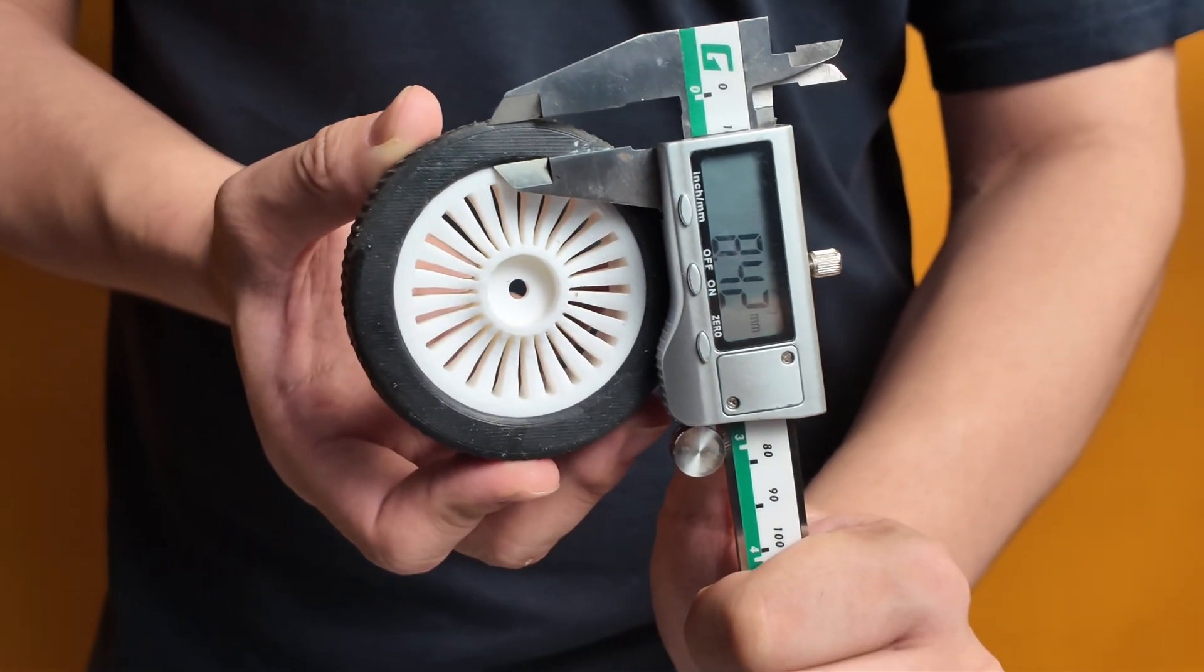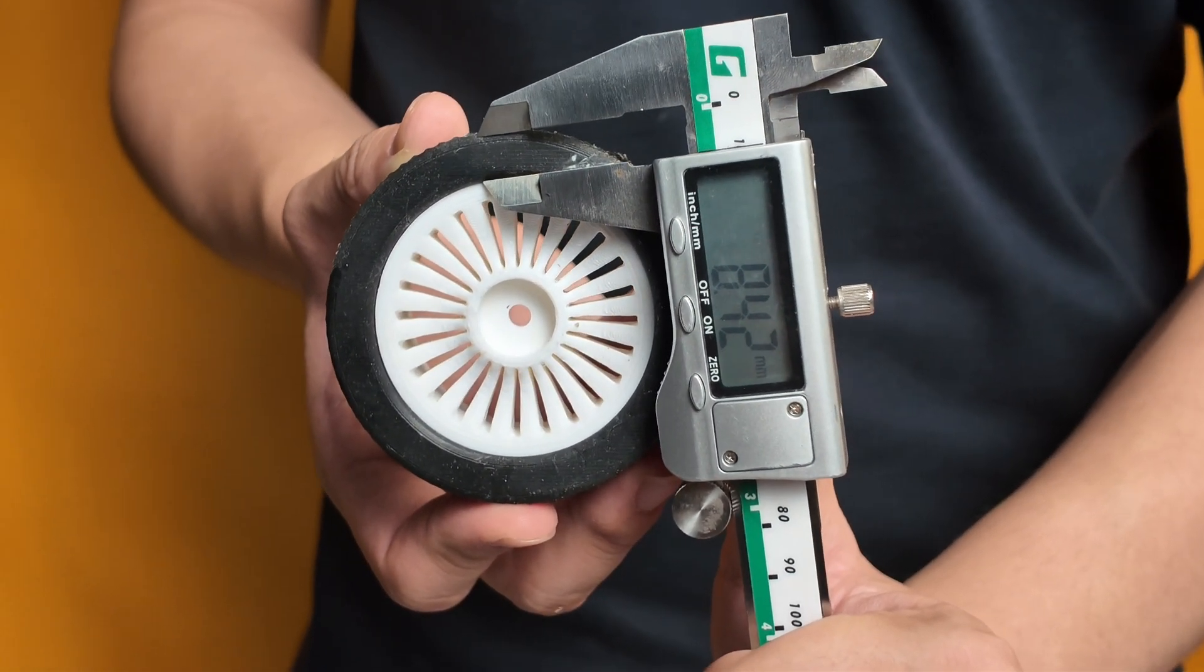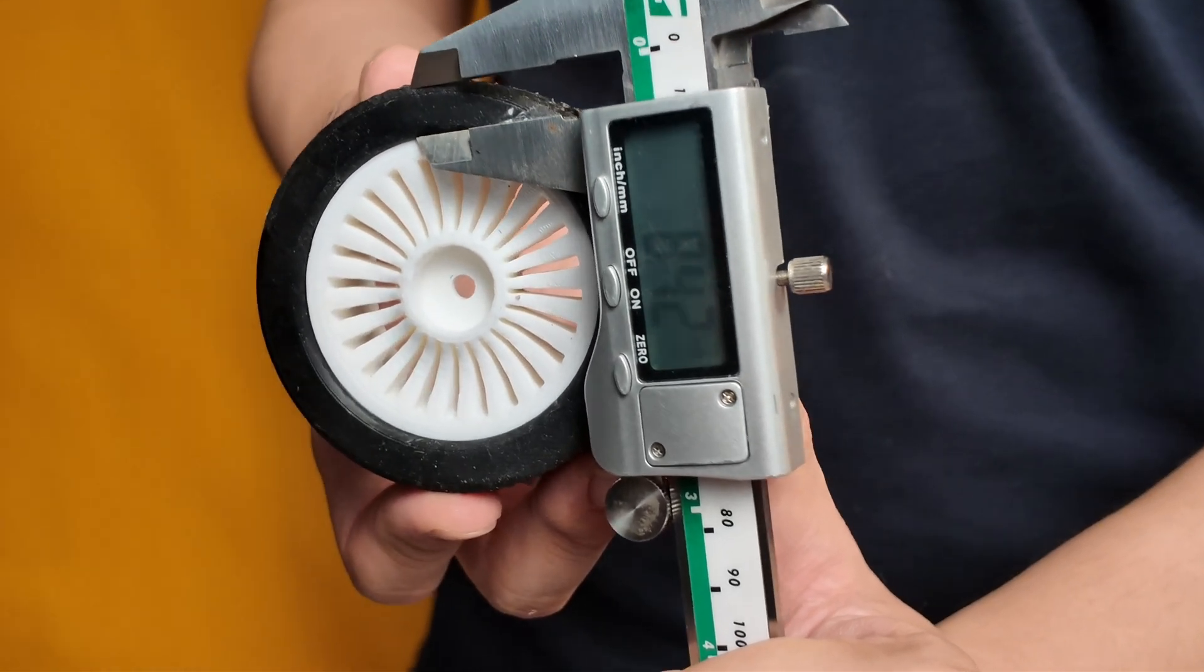If you want a firmer feel, thicken the sidewall. If you want more surface contact and sensitivity, slightly thin the tread.